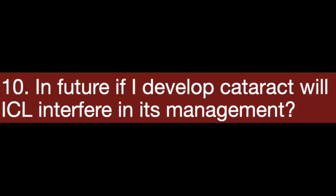The 10th question: in the future, if I develop cataract, will ICL interfere in its management? The answer is no. When cataract develops, the ICL is first removed. Removal of the lens is very easy, just like implanting it. Then the routine cataract procedure is done followed by implantation of an intraocular lens. So at no point is there any difficulty as far as cataract surgery is concerned.